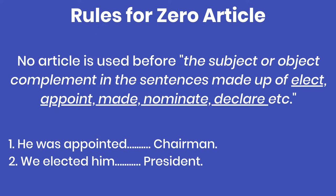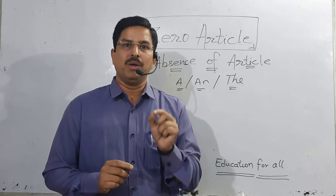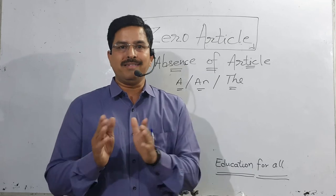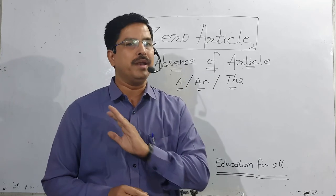The next rule says: no article is used before the subject or object complement in sentences made with verbs like made, made up of, elect, appoint, nominate, declare. With these verbs, if there is a subject complement or object complement, no kind of article is used before it.